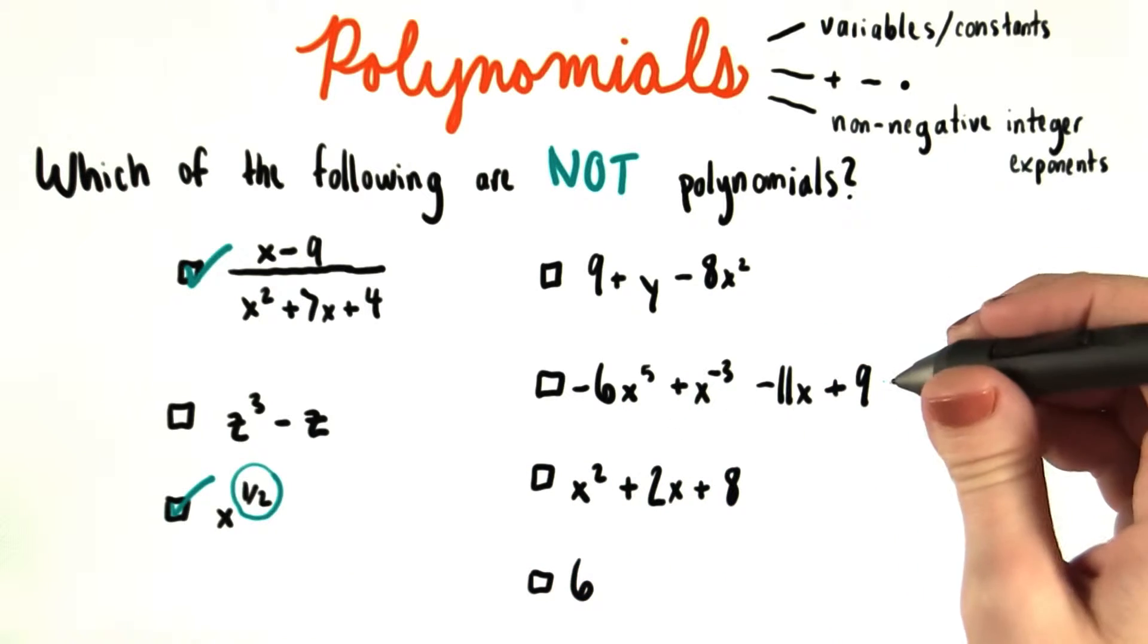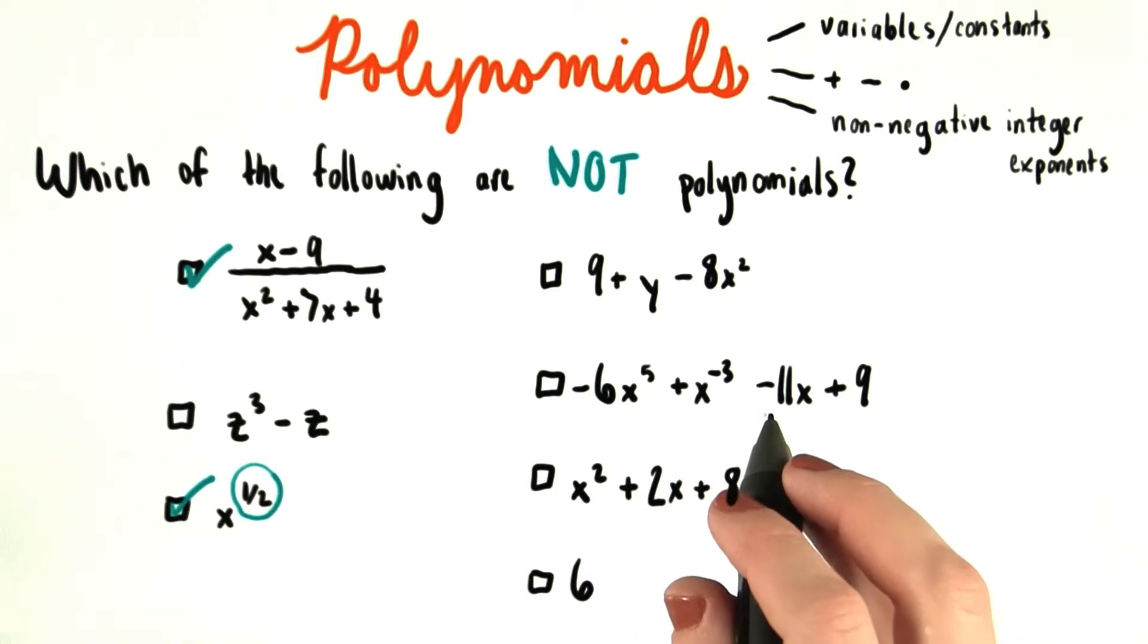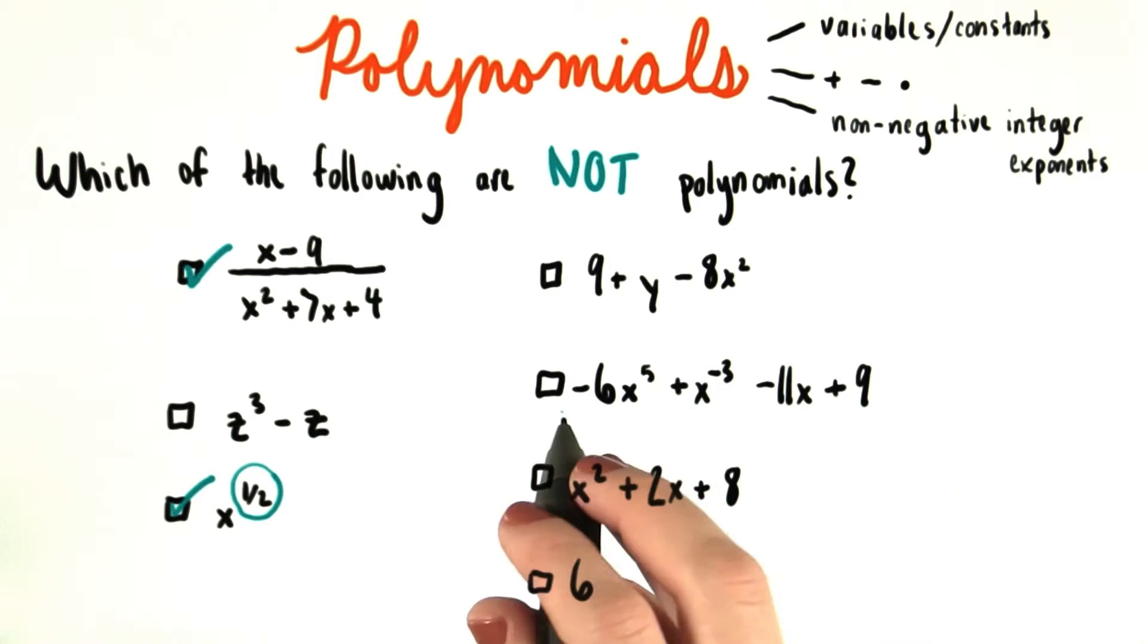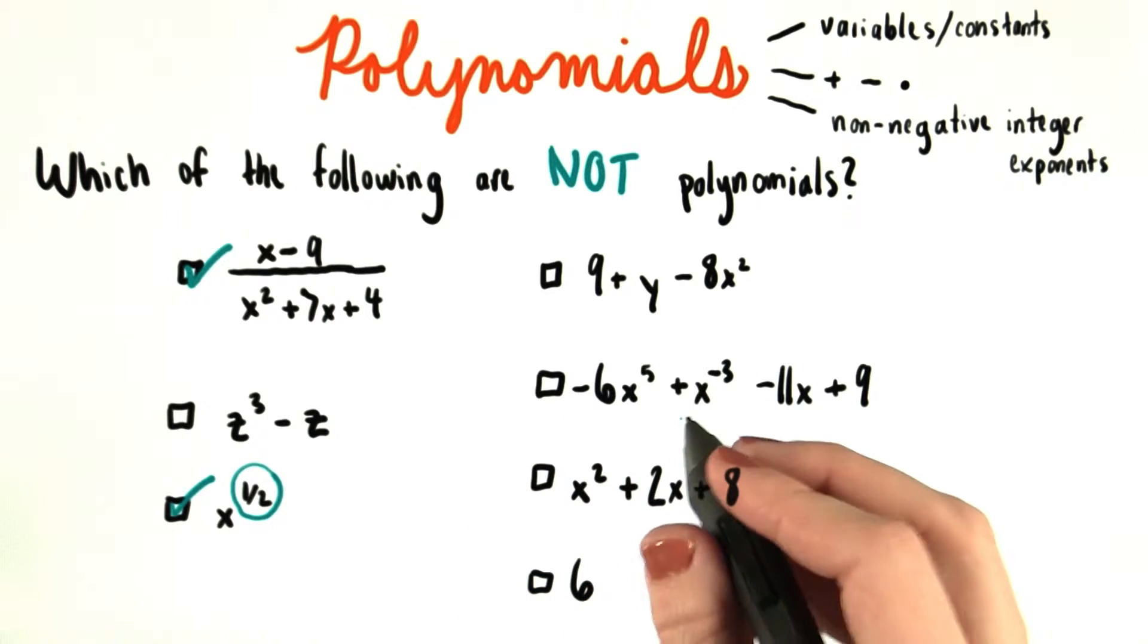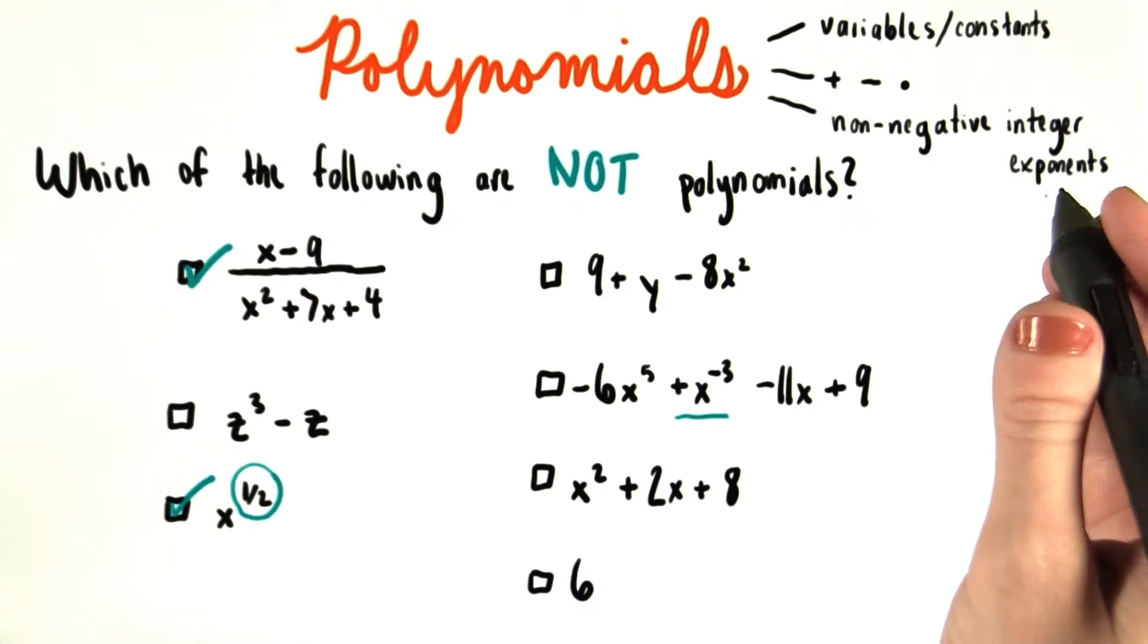We can think about that rule again when we look at this answer choice right here. Negative 6x to the fifth plus x to the negative third minus 11x plus 9. All of these terms in here are fine for being part of polynomials except for this one, x to the negative third, because negative 3 is a negative integer exponent, not a non-negative integer exponent.